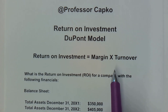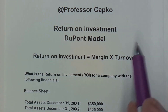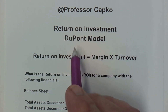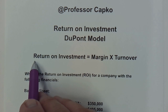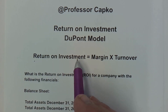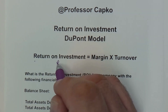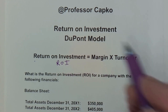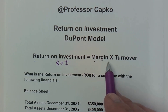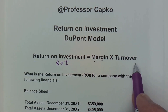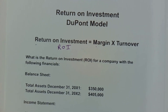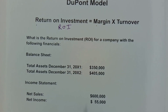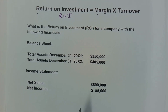When we're asked to calculate the return on investment using the DuPont model, we need to know that the return on investment — also known as the ROI — is equal to the margin times the turnover. Let's look at some specific financials and apply that so you can see it in action.